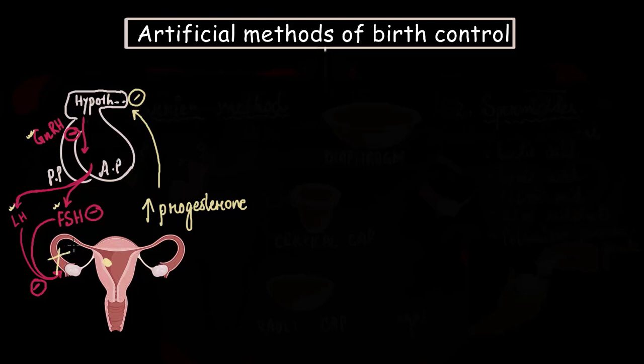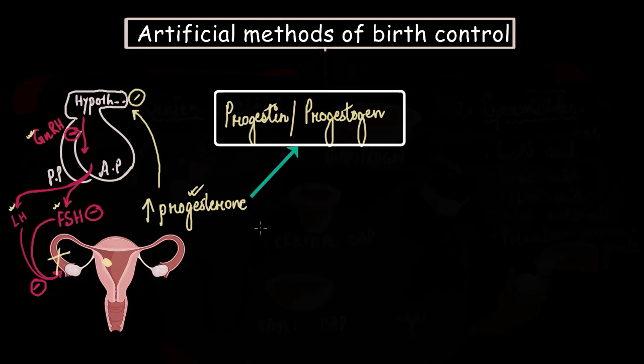So the scientific community thought of mimicking progesterone by creating artificial progesterone. They are now available by different names like progestin or progestogen or maybe simply we call it synthetic progesterone. And they are made available as contraceptive pills for women. And taking this would stop ovulation.